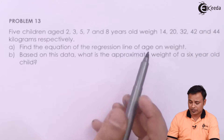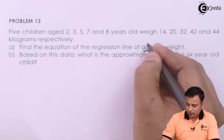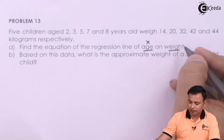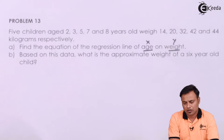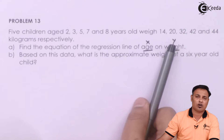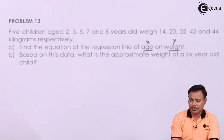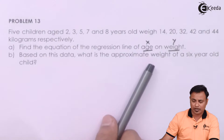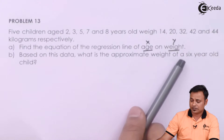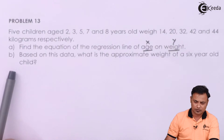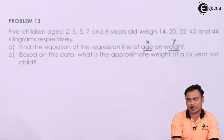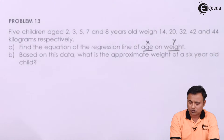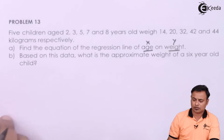We want to find the equation of the regression line of age (x) on weight (y), so we need to find the regression line x on y. Second, based on this data, what is the appropriate weight — that is, find the value of y — of a six-year-old child. For the first case, find out the regression equation of x on y.